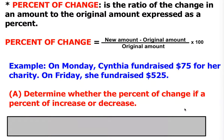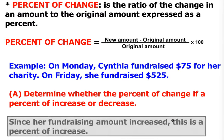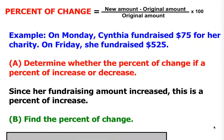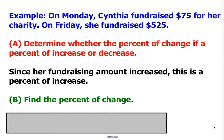Part A: we have to determine if this percent of change represents an increase or a decrease. Note there's a small typo — the sentence should say determine whether the percent of change is a percent of increase or decrease. Since she started the week with $75 and finished with $525, her fundraising amount clearly increased. Therefore, this is an example of a percent of increase problem.